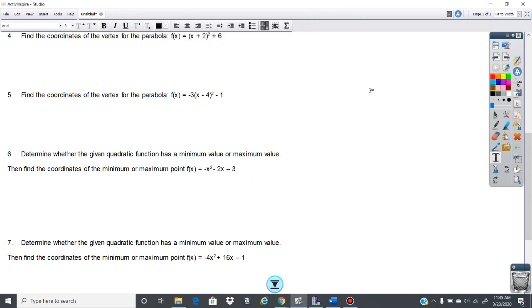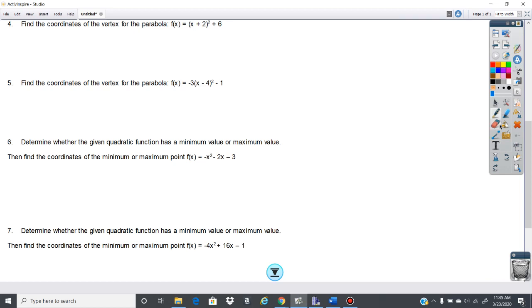Here is our next set of problems. We want to find the vertex of a parabola. What we are given here, let's see, this is in your vertex form, which is in this form here: a(x - h)² + k, where your vertex is (h, k).